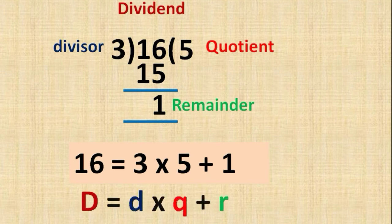16 is the dividend capital D. Dividend equals divisor small d times quotient plus remainder r. If we observe this form, let me tell you the formula. This is Euclid's division lemma formula.